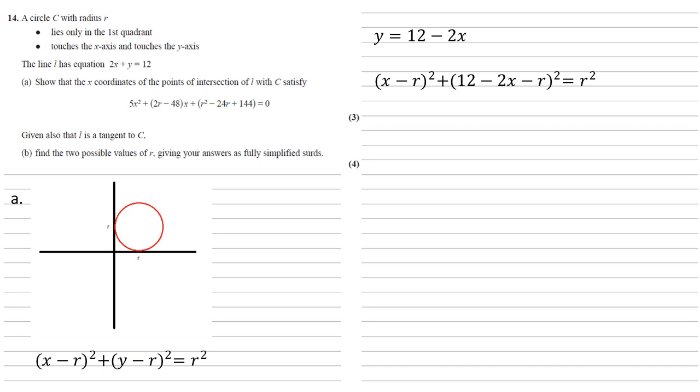We're now going to square the brackets. So x minus r squared is x squared minus 2rx plus r squared. We've got to be a little bit careful on the next bracket, squaring this as there are three terms, but let's work it through a term at a time. So I'm going to start by multiplying everything by the 12, the first term. So 12 times 12 is 144, 12 times minus 2x is minus 24x, 12 times minus r is minus 12r. We'll now multiply everything through by the minus 2x, so we get minus 24x plus 4x squared plus 2xr. Finally multiplying everything through by the minus r gives us minus 12r plus 2xr plus r squared, and that's still equal to r squared.